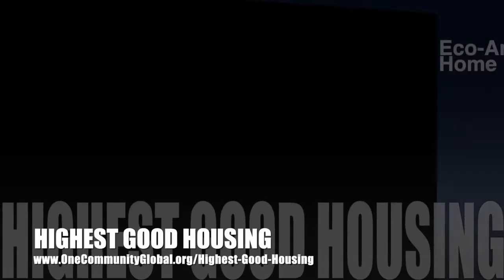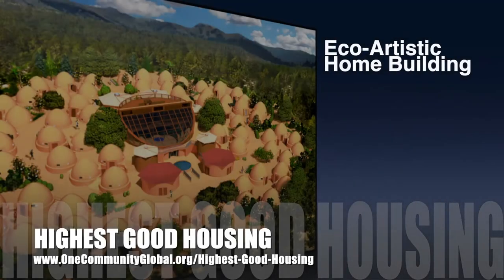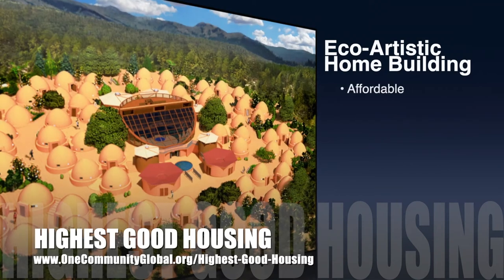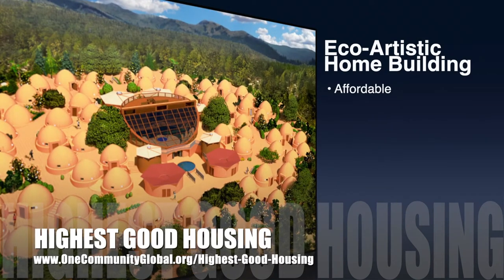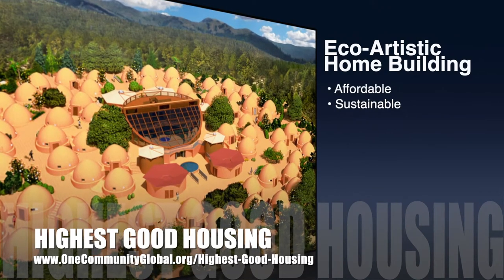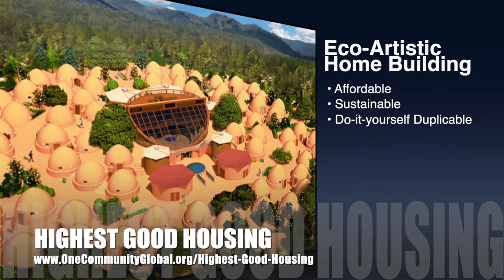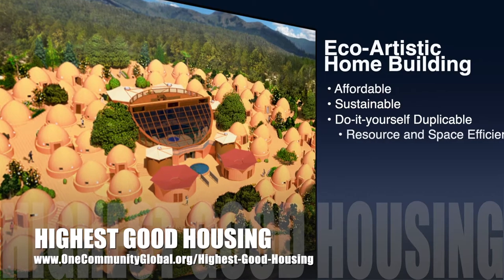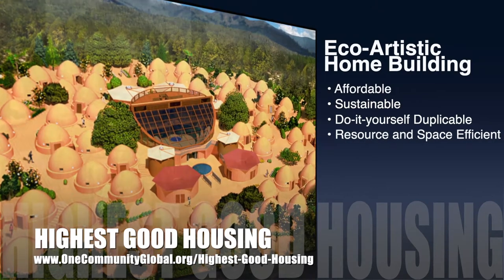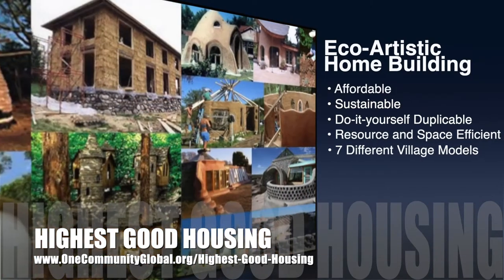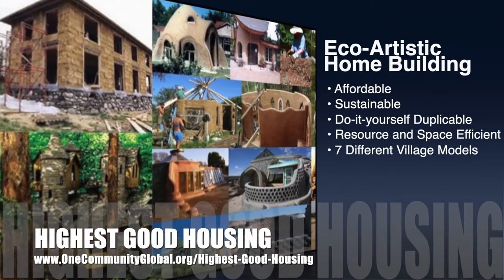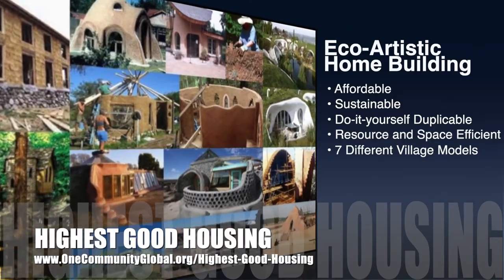The One Community approach to highest good housing is eco-artistic home building that is affordable, sustainable, do-it-yourself duplicable, resource and space efficient, and consists of seven different sustainably constructed village models.